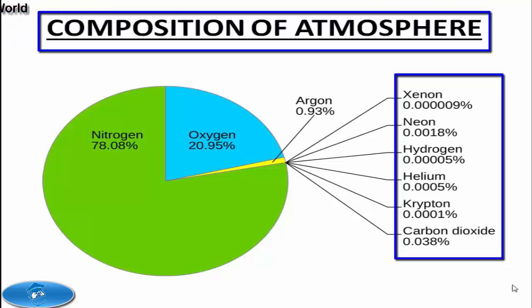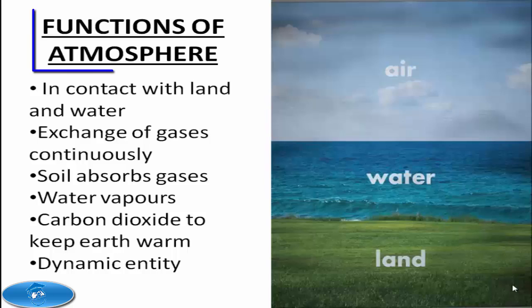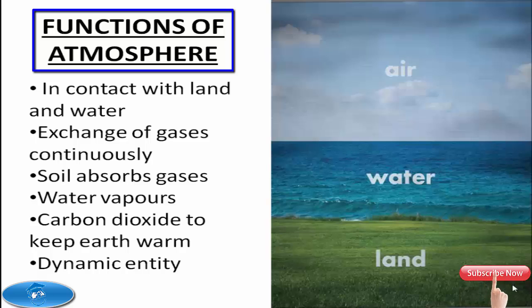Now we have learned about what constitutes the atmosphere. Let us see what are the functions of the atmosphere. In physics we must have studied that air also has weight and exerts pressure. Being pressed down, it always remains in contact with land and water, and due to their physical contact, exchange of gases between air, land, and water takes place on a continuous basis. On land, soil absorbs oxygen and nitrogen due to this contact. Water vapors in air rise from oceans on account of evaporation.